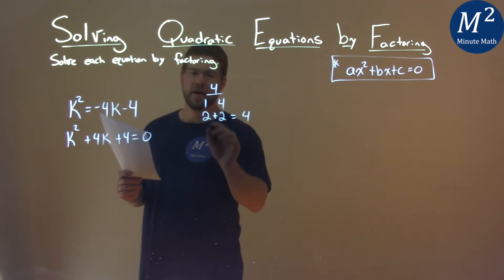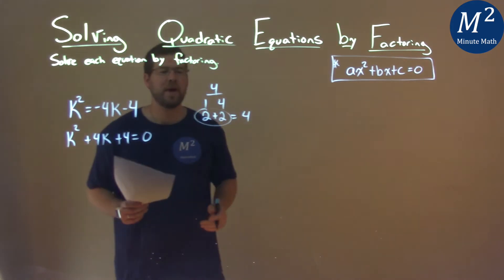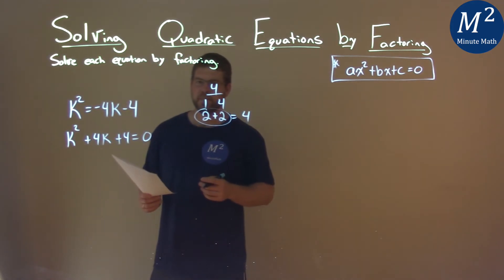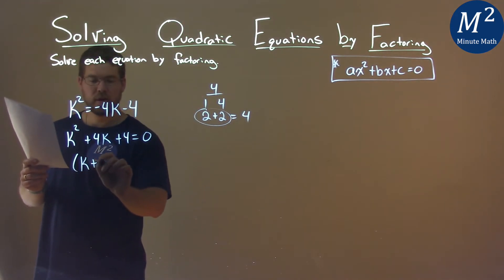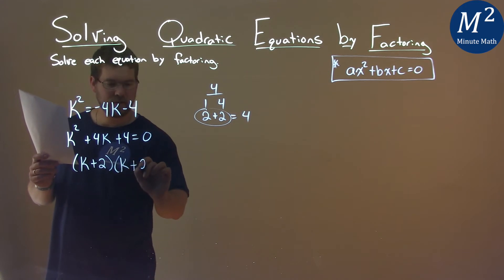That's 2 and 2. 2 plus 2, hope you know that, is 4. So the pair I'm looking for is 2 and 2. So I can rewrite this in factored form as k plus 2, and k plus 2 as well.